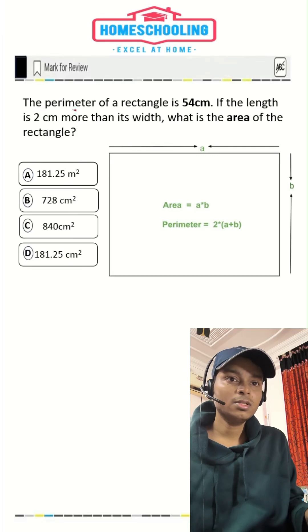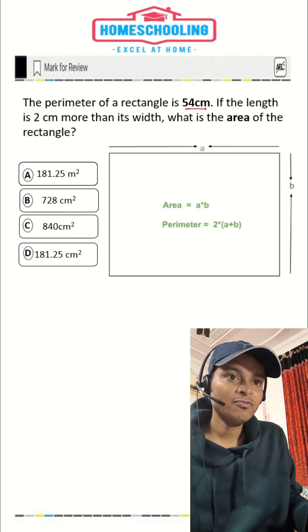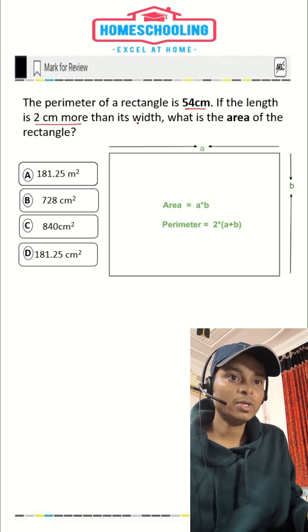This is an area SAT math problem. The perimeter of a rectangle is 54 centimeters. If the length is two centimeters more than its width, what is the area of the rectangle?